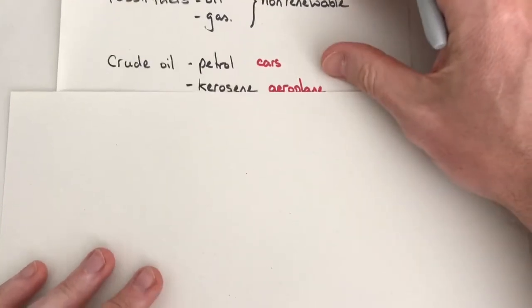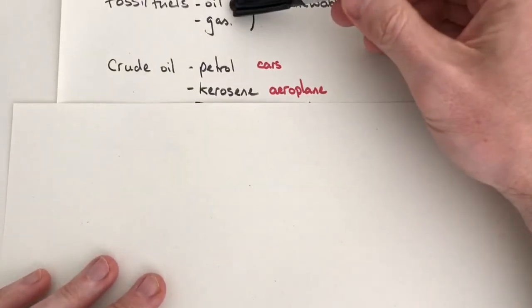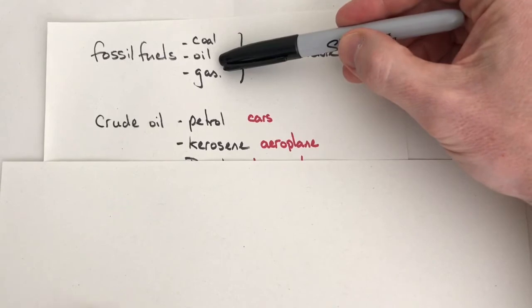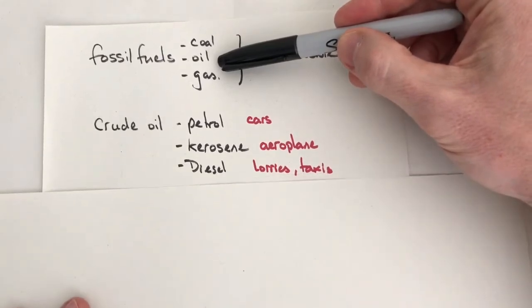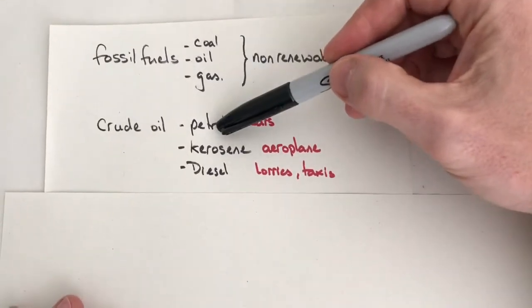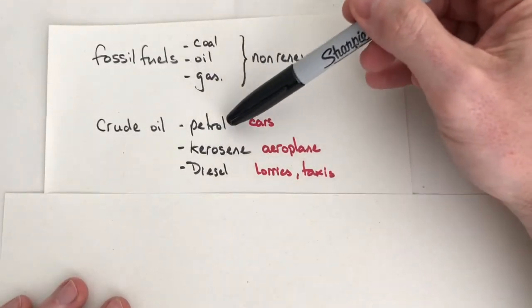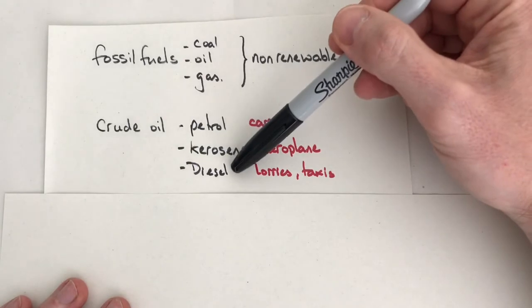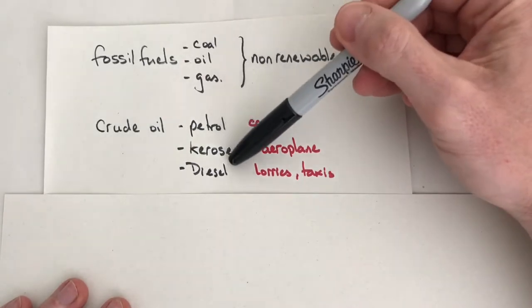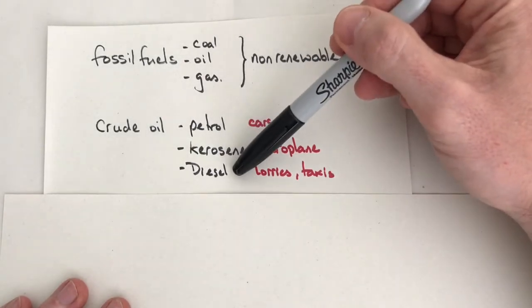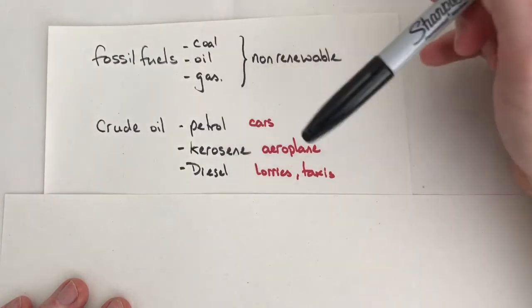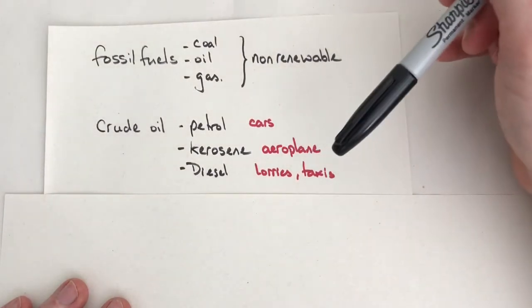Within this as well, the crude oil that's part of the fossil fuel process here - crude oil, there are many components to this, many fractions to this. Just going to focus on three within this little video. We've got petrol, kerosene, and diesel. These are all relatively short chain hydrocarbons and that means they're very good, as you can see here, as fuels.